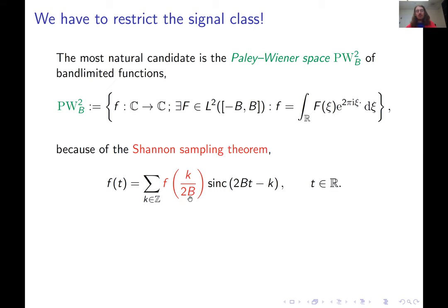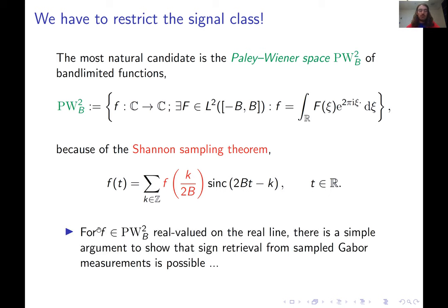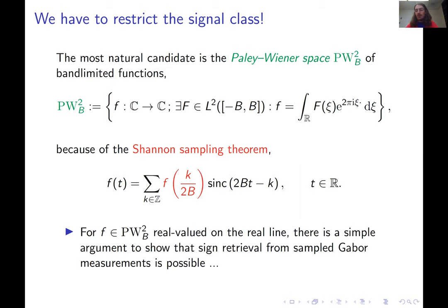Not only is there the Shannon sampling theorem in the Paley-Wiener space, but with some effort we can prove that real valued elements of the Paley-Wiener space can be uniquely recovered up to global sign from sampled Gabor measurements. We call this a sign retrieval problem because if your function is real valued, you're not trying to assign complex phases to every single point, but you're trying to assign signs. This distinguishes the easier real-valued signal case from the harder complex-valued signal case.